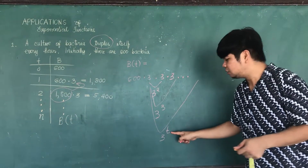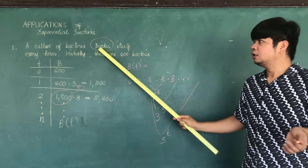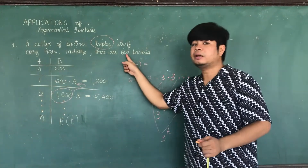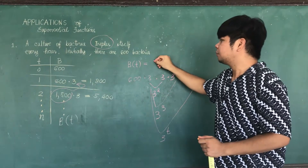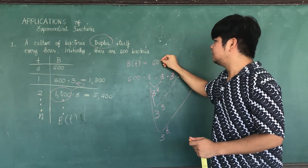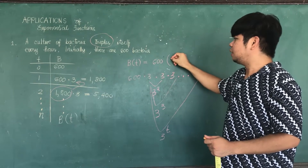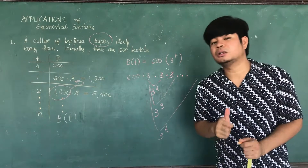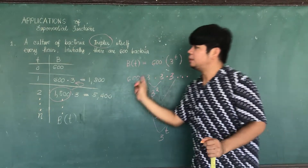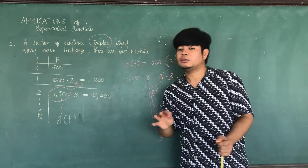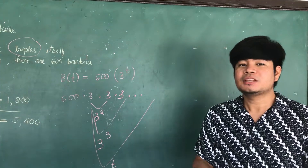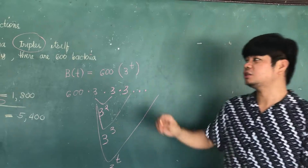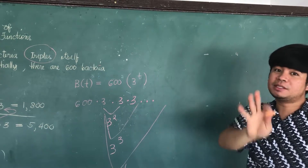Three raised to t illustrates the word 'triples itself.' Since the initial number is 600, B of t is equal to 600 times the quantity three raised to t. That is the model function illustrating the behavior of the bacteria when it is increasing. Let us verify this exponential function — if time is zero, B of zero must be 600.